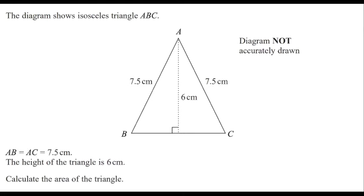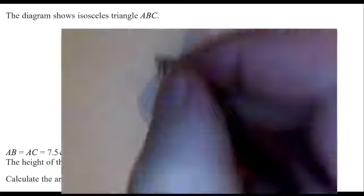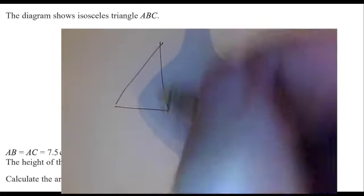So we've been asked to calculate the area of a triangle, and you'll notice that we have two right-angled triangles, so that means we're allowed to use Sohcahtoa and we're also allowed to use Pythagoras.